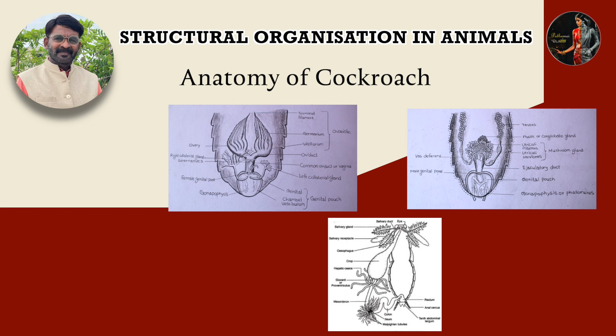The foregut is the anterior part. It is surrounded by biting and chewing type of mouth parts — the mandibles. The pharynx in turn bends to join a narrow tubular passage called esophagus, which passes through the neck and opens into a sack-like structure called crop. The crop is a large pear-shaped sack that stores the food.